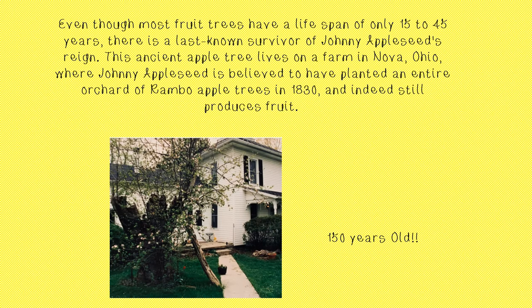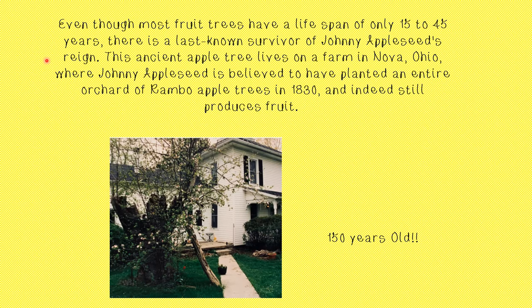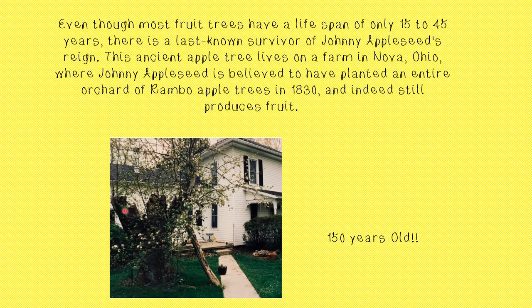Here's a little history lesson on Johnny Appleseed's orchards. Even though most fruit trees have a lifespan of only 15 to 45 years, there is a last known survivor of Johnny Appleseed's reign. This ancient apple tree lives on a farm in Nova, Ohio, where Johnny Appleseed is believed to have planted an entire orchard of Rambo apple trees in 1830. Indeed, this tree still produces fruit. The tree is 150 years old. Part of the trunk of the tree died, but out of the ground has sprouted a new part of the tree.